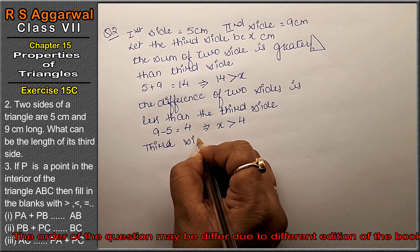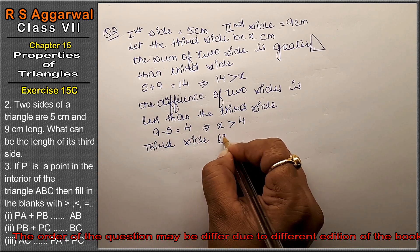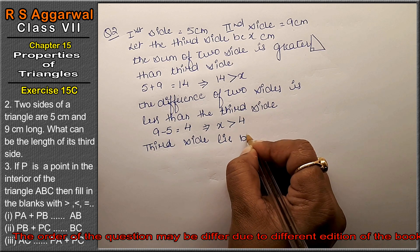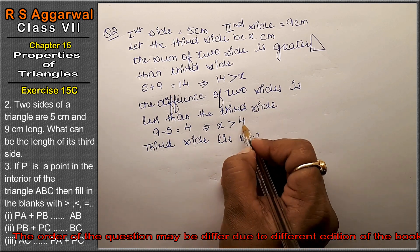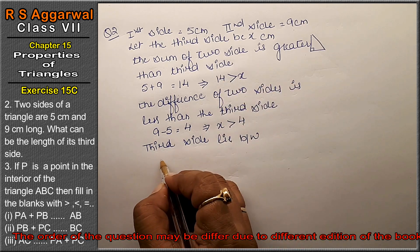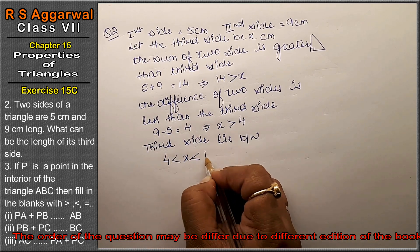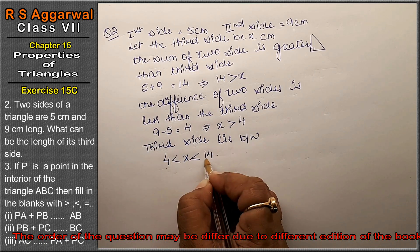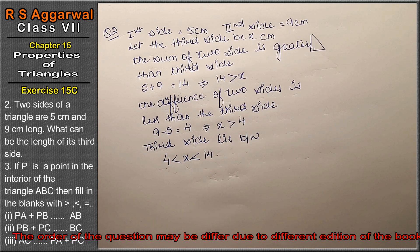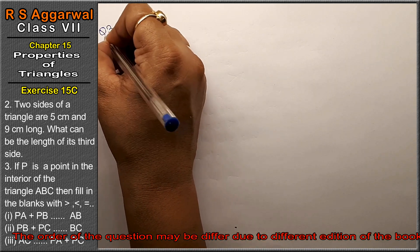So the third side lies between 4 and 14. This is the answer for the third side. Now let's do question number 3 of Exercise 15C, Properties of Triangles.